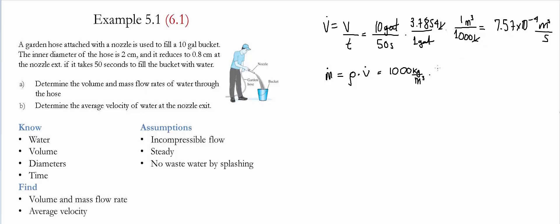We multiply by the volume flow rate 7.57 times 10 to the negative 4 meter cubed per second. Meter cubed and meter cubed cancel, and the value left is 0.757 kilograms per second, which are the units of mass flow rate.